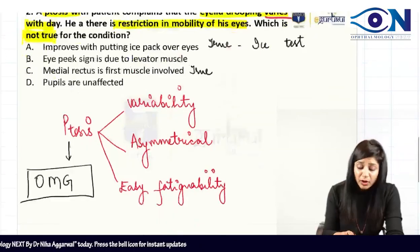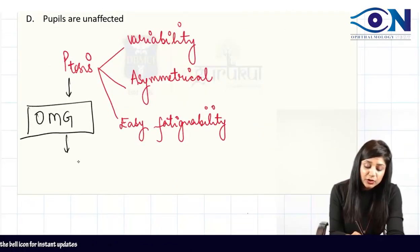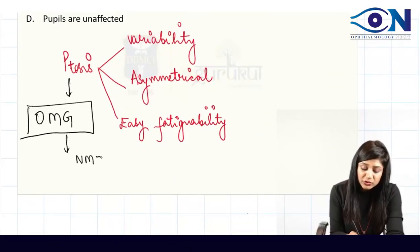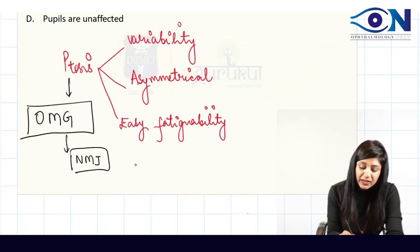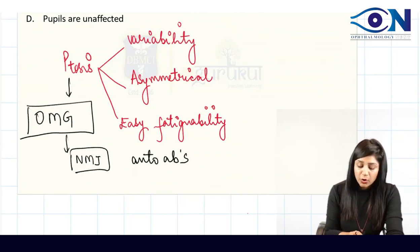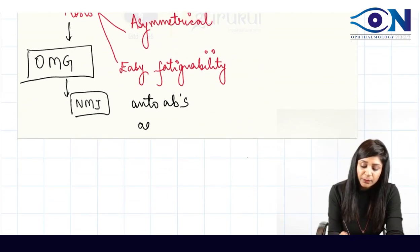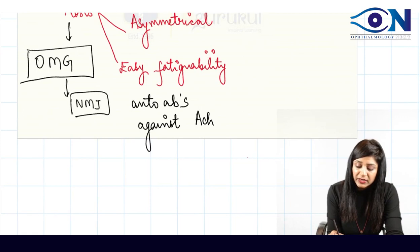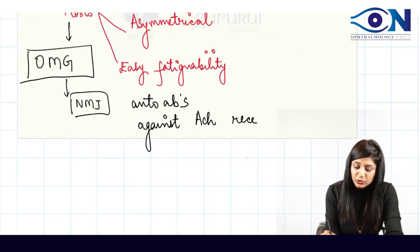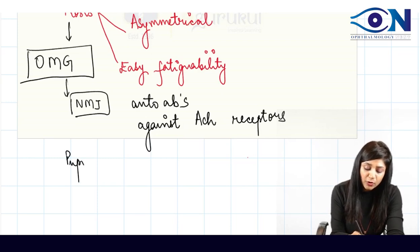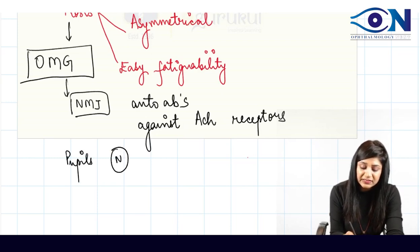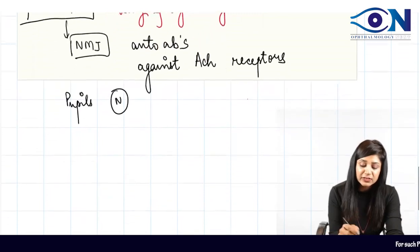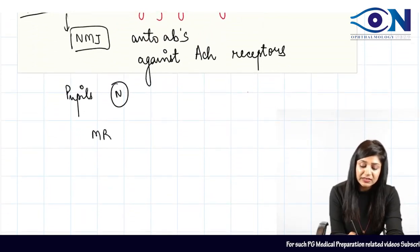This is a condition of the neuromuscular junction where auto-antibodies are formed against the acetylcholine receptors. Because of this mechanism, the pupils will be normal — there is no nerve palsy here. The first muscle to be affected is the medial rectus muscle.